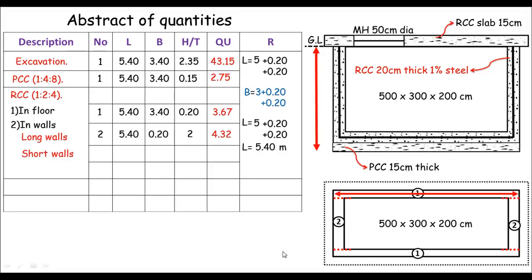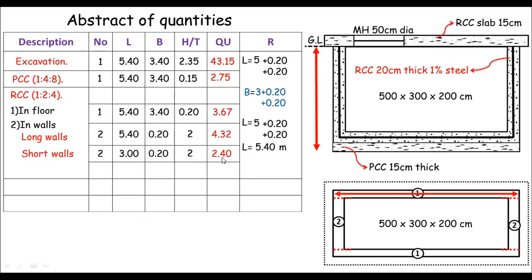There are also 2 short walls. The length of each short wall is only 3 meters, because the end portions are already taken by the long walls. The breadth and height remain the same at 0.20 meters and 2 meters respectively. Multiplying these four columns gives short wall quantity = 2.40 cubic meters.